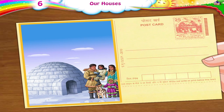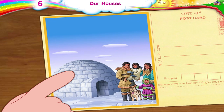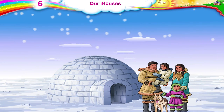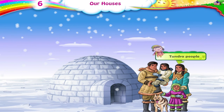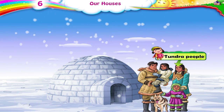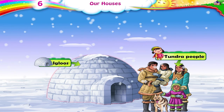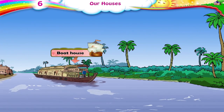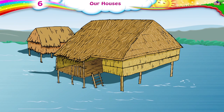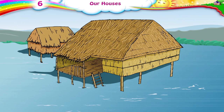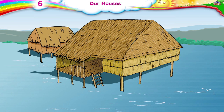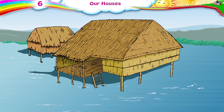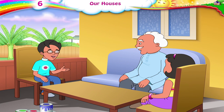Look at these houses from other parts of the world. In the snow-bound regions of the tundra, people live in houses made of ice called igloos. On rivers and lakes, people have boat houses. In places that get flooded, people also live in houses high up above the ground on stilts or supports.